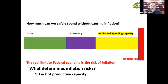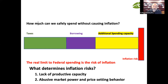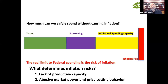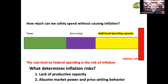What determines the risk of inflation is two things: first, the lack of productive capacity in strategic areas; and second, what could be called the abuse of market power — the price-setting behavior of key players in the economy, including importers with exclusive import licenses. The more you build productive capacity in those strategic areas, the broader your additional spending capacity gets and the further out you push the risk of inflation. The more you democratize your market by taxing and regulating abusive price-setting behavior, the more spending capacity you have without hitting the inflation barrier.